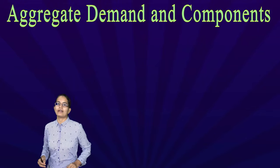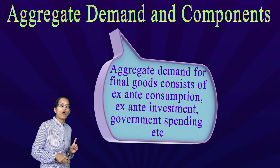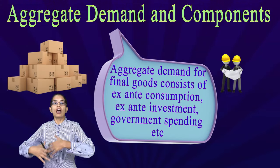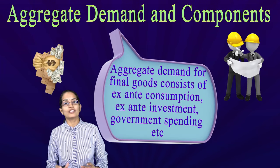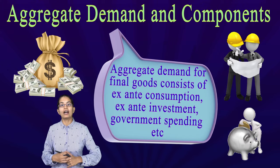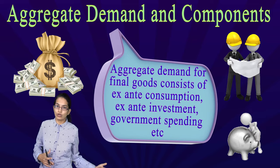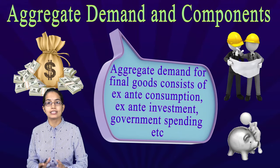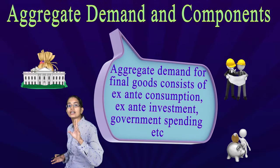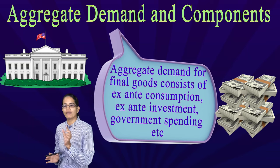The aggregate demand of final goods and services consists of ex-ante consumption — this is planned consumption, the demand from the consumer side. It is also based on ex-ante investment, because I am trying to invest more. For example, I plan to invest for the coming three months on videos because I might be out of town for two weeks. That is a planned behavior — ex-ante investment. The next important thing is government spending. All of these lead to the aggregate demand of final goods.